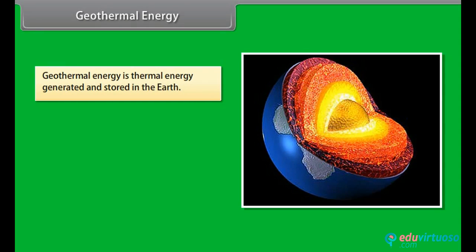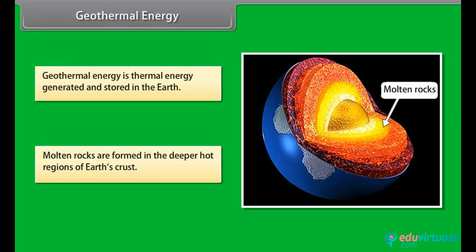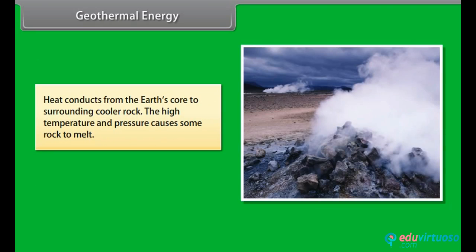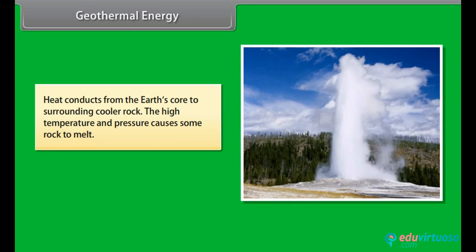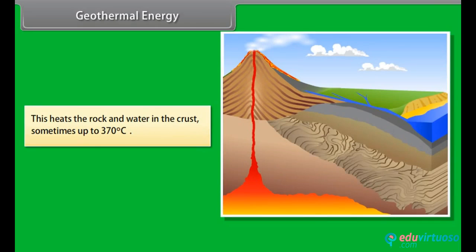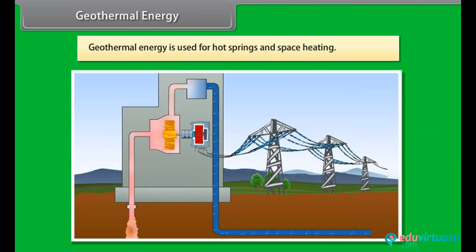Geothermal energy. Geothermal energy is thermal energy generated and stored in the earth. Molten rocks are formed in the deeper, hot regions of the earth's crust. Heat conducts from the earth's core to the surrounding cooler rock. The high temperature and pressure causes some rock to melt, heating the rock and water in the crust — sometimes up to 370 degrees Celsius. Geothermal energy is used for hot springs and space heating.